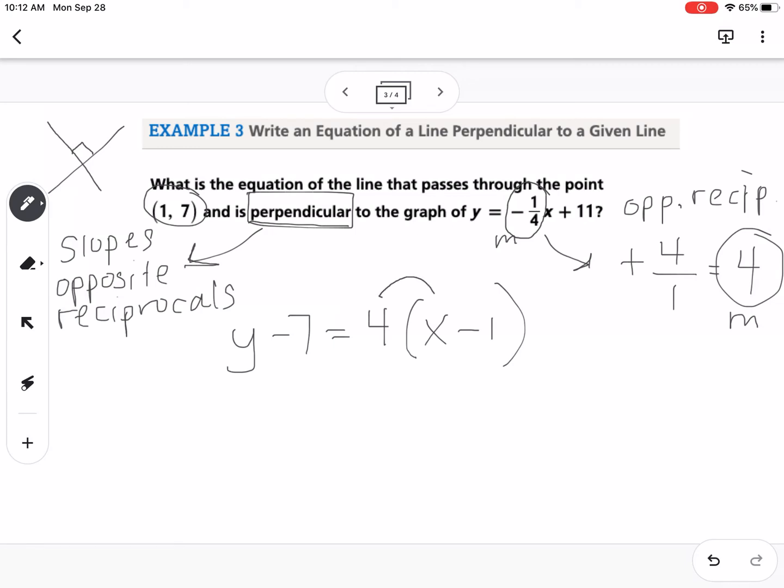So I'm going to distribute the 4. So this would be 4x minus 4, and then my last step is to add 7 to both sides. So this would be y equals 4x plus 3. So there's my equation in slope-intercept form. Here's my equation in point-slope form.